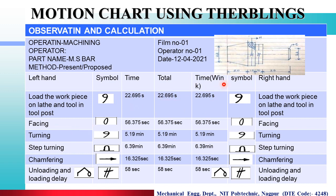Next: अभी क्या करना है आपको? Facing करना है, then Turning करना है, Step Turning करना है, and then Chamfering करना है. तो जब Facing करेंगे तो आपको Inspect करना पड़ेंगा, then Position भी करना पड़ेंगा Tool को, then उसको Hold करके रखना पड़ेंगा, और आपको Transport भी करना पड़ेंगा. That's why this symbol is here — it is simultaneously working. Left Hand और Right Hand का time यहाँ पर note down किया है, and this is the operation time for this process.